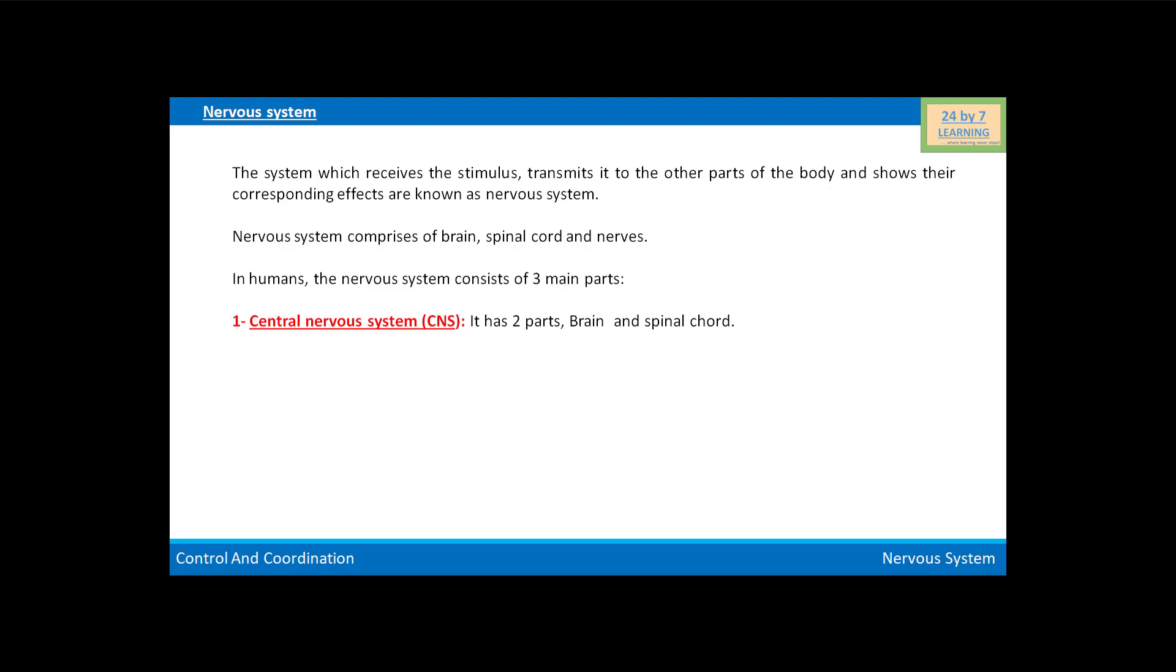These are the central nervous system, which has two parts: brain and spinal cord. The second part is the peripheral nervous system, which includes cranial nerves and spinal nerves. And the third part is the autonomic nervous system, which includes parasympathetic and sympathetic nervous systems.